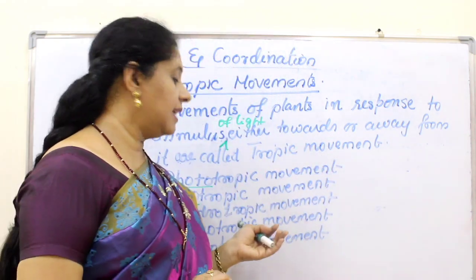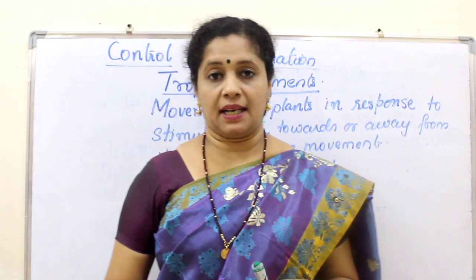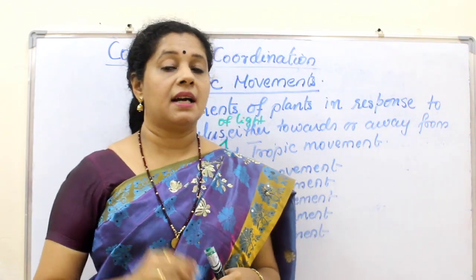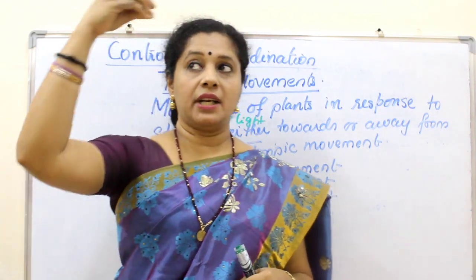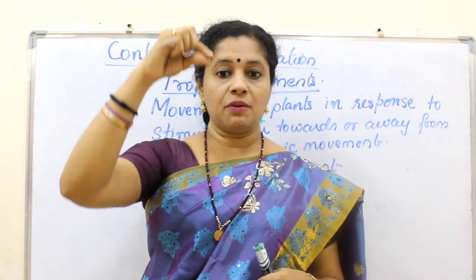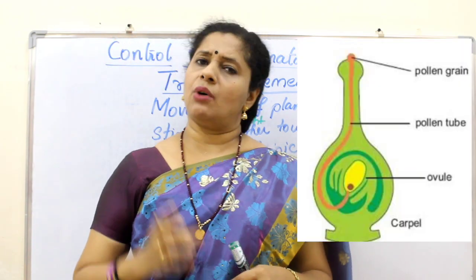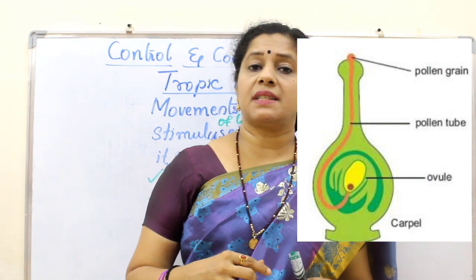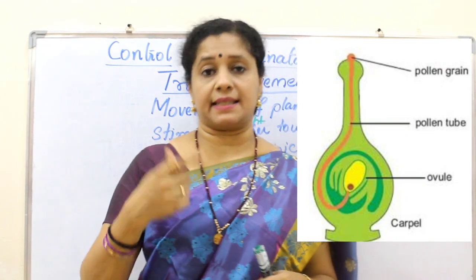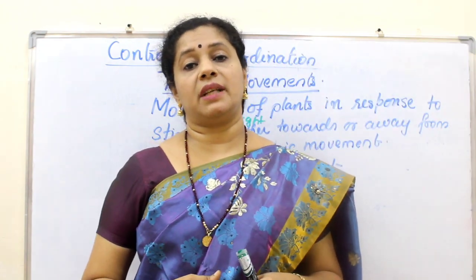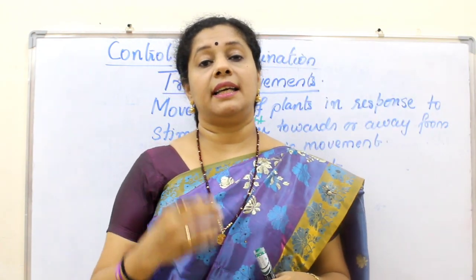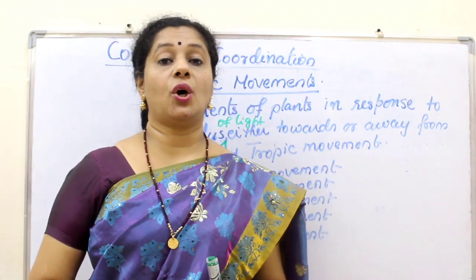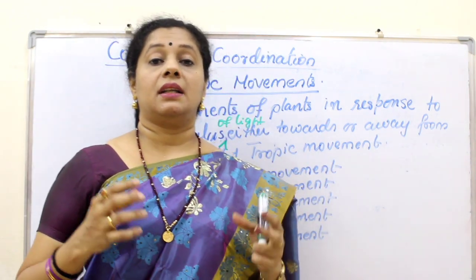The last tropic movement is chemotropism — movement towards chemicals. When we discuss sexual reproduction in flowering plants, we learn that after pollination, the pollen tube grows down to the ovule. The pollen tube is guided by certain chemicals released by the ovule. Such tropic movement in response to chemicals is called chemotropism.